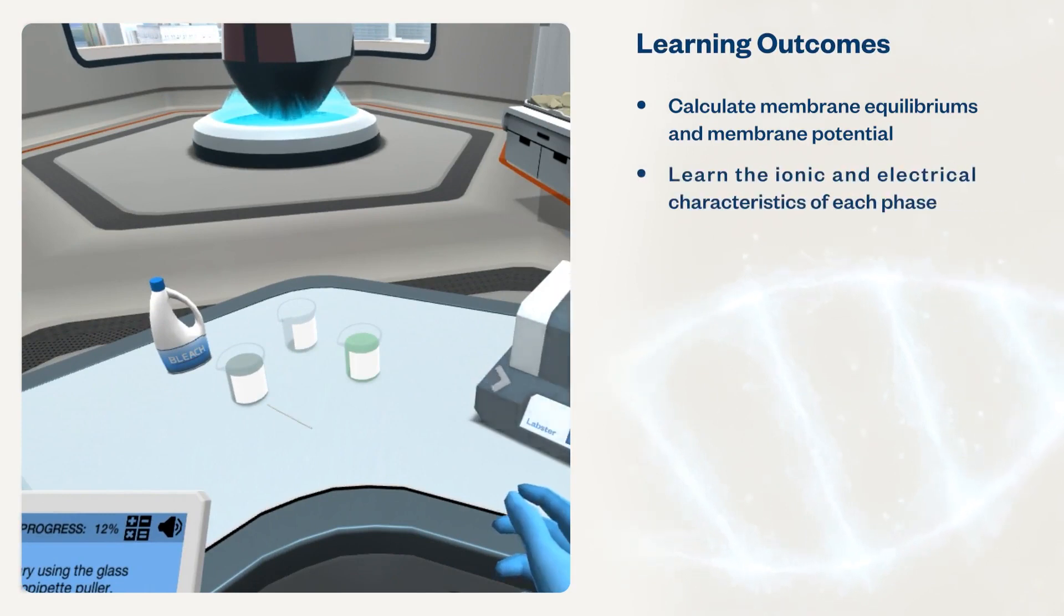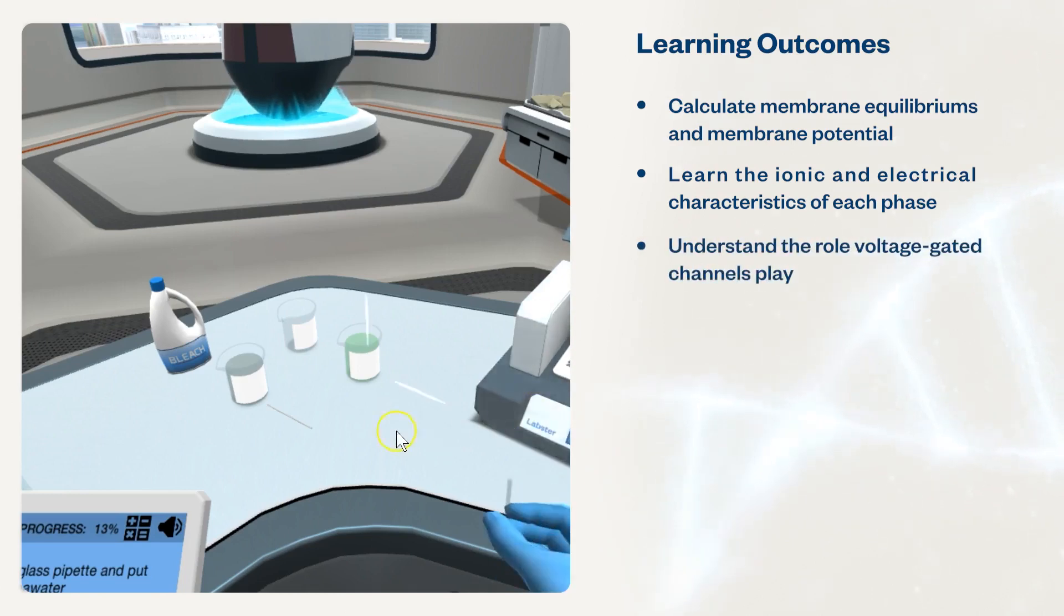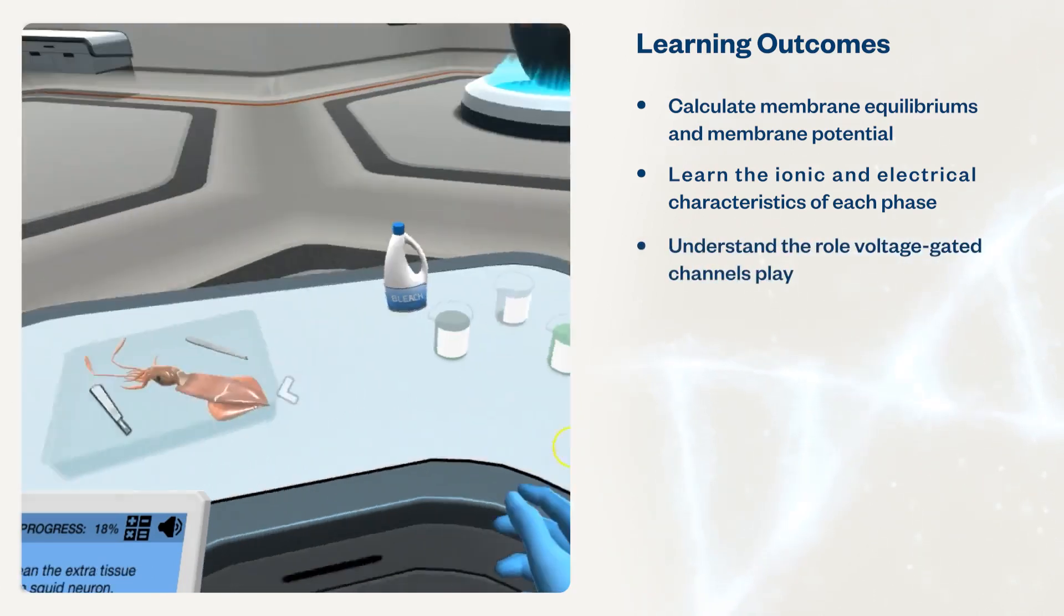Learn the ionic and electrical characteristics of each phase of an action potential. Understand the role voltage-gated channels play in determining the shape of an action potential.